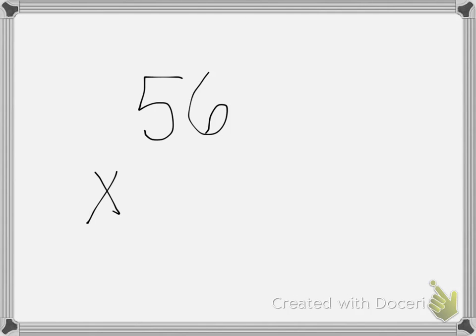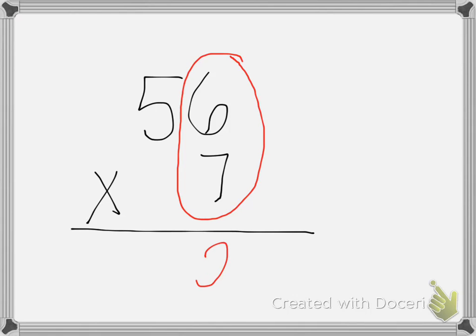56 times 7. First, we multiply the ones. 7 times 6 is 42, meaning I have two ones and four tens left over. Then, 7 times 5 is 35, plus 4 is 39. Our answer is 392.